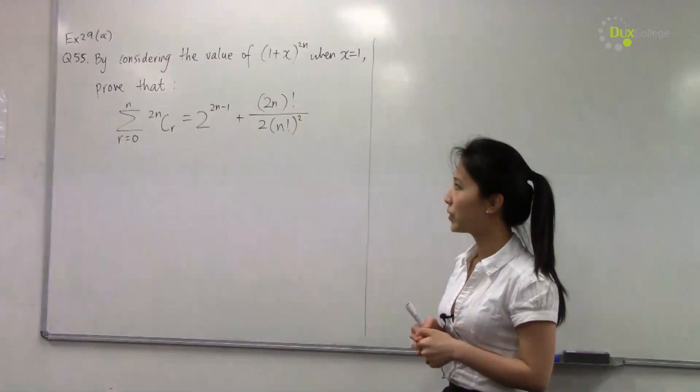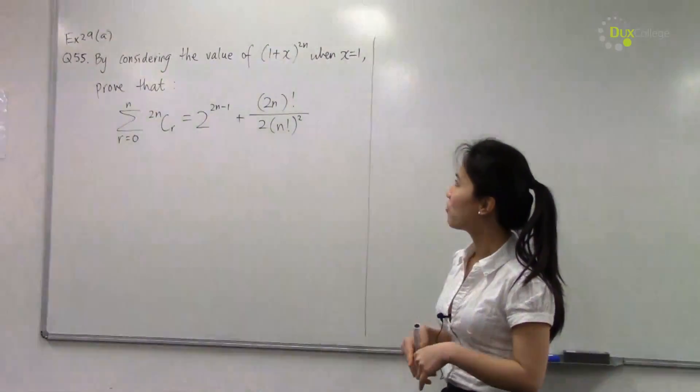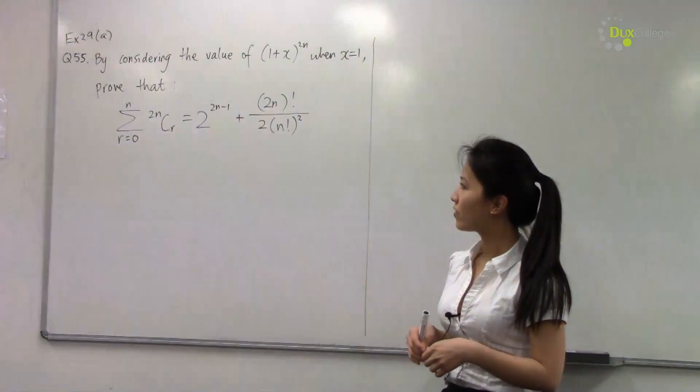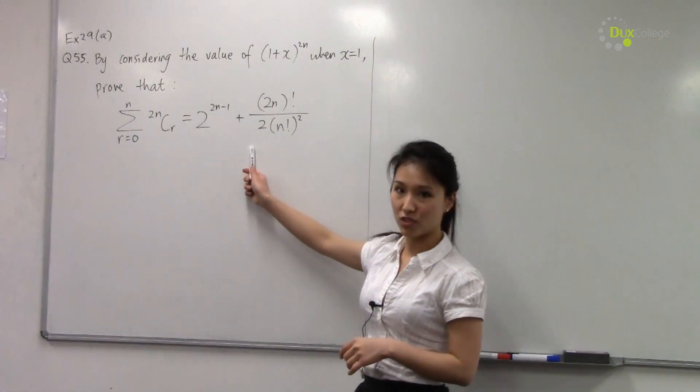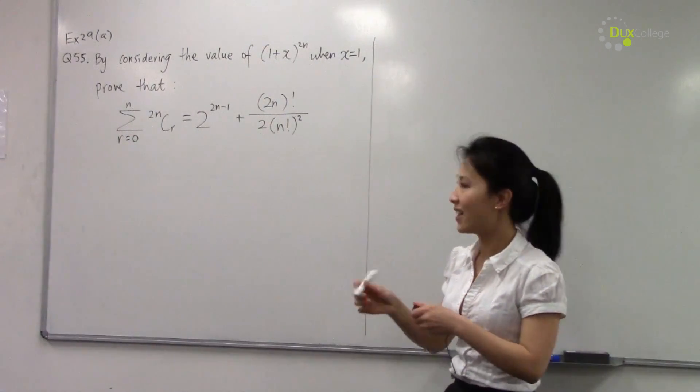Alright, let's work on question 51 from exercise 29a. By considering the value of (1+x) to the power of 2n when x equals 1, prove that this expression is true. So of course, let's expand (1+x) to the power of 2n.